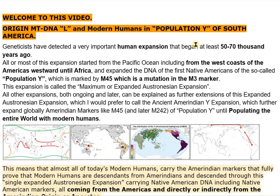Geneticists have detected a very important human expansion that began at least 50 to 70,000 years ago. All or most of this expansion started from the Pacific Ocean, including from the west coasts of the Americas westward until Africa, and expanded the DNA of the first Native Americans of the so-called Population Y, which is marked by M45, a mutation in the M3 marker. This expansion is called the Maximum or Expanded Austronesian Expansion.